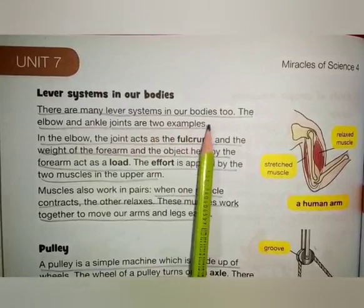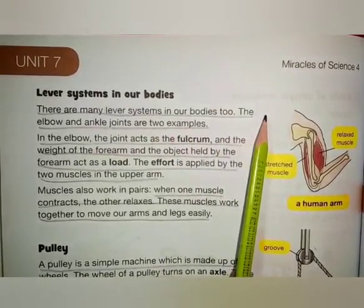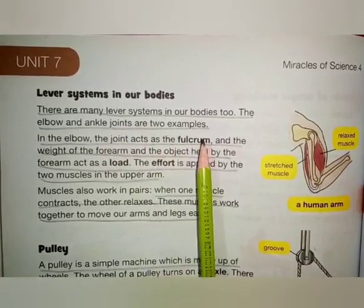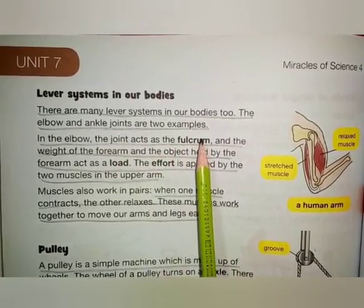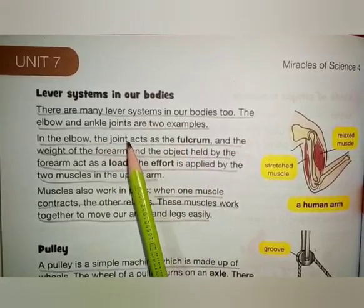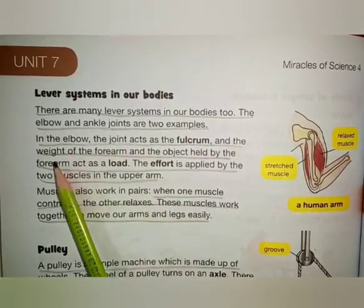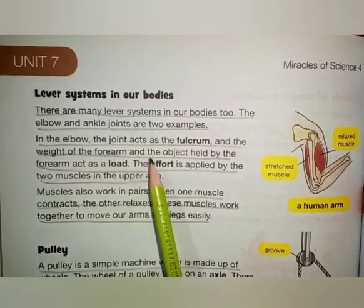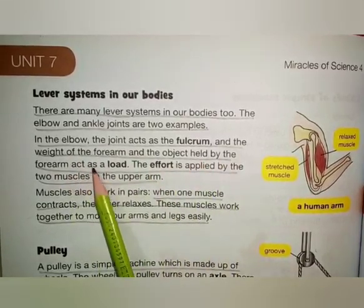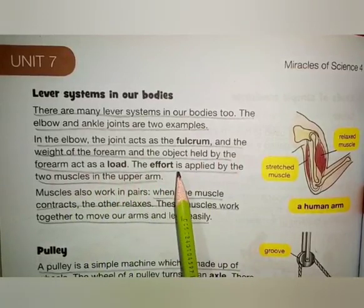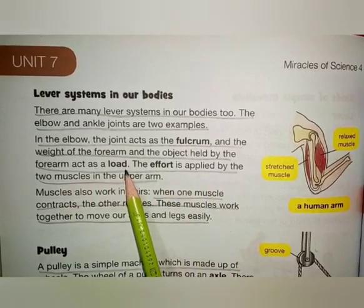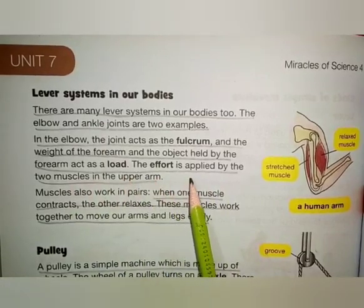There are many lever systems in our bodies too. The elbow and the ankle joints are two examples of levers in our body. In the elbow, the joint acts as the fulcrum, and the weight of the forearm and the object held by the forearm act as a load.